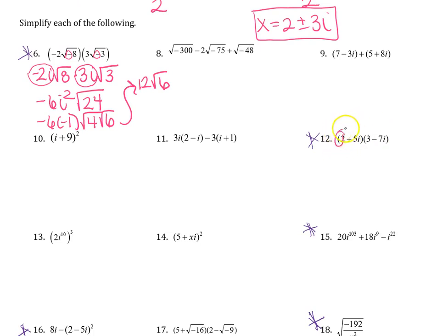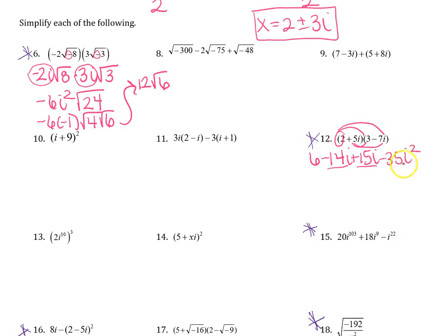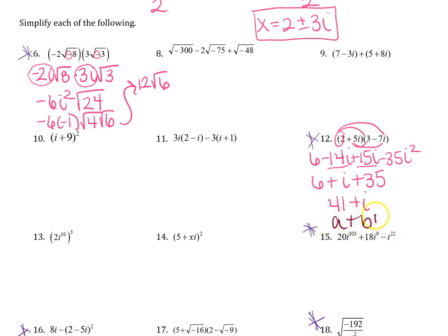Multiplying two binomials: you're just FOILing like you normally would. 2 times 3 is 6, minus 14i, plus 15i, minus 35i squared. Combining like terms and remembering that i squared is negative 1, that changes to plus 35. Make sure your final answer is in a plus bi form. So 41 plus i. This is the correct form you need to be in — if you have it flipped, we will have to take off a point.